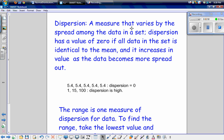We can also compare data by comparing the dispersion of the data. Dispersion is a measure that varies by the spread among the data in a set. Dispersion has a value of zero if all of the data in the set is identical to the mean, and then it increases in value as the data becomes more spread.